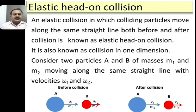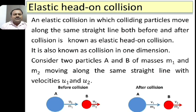Coming to the elastic head-on collision: an elastic collision in which colliding particles move along the same straight line both before and after collision is known as an elastic head-on collision. This type of collision is also known as collision in one dimension. Consider two particles A and B of masses M1 and M2 moving along the same straight line with velocities U1 and U2.